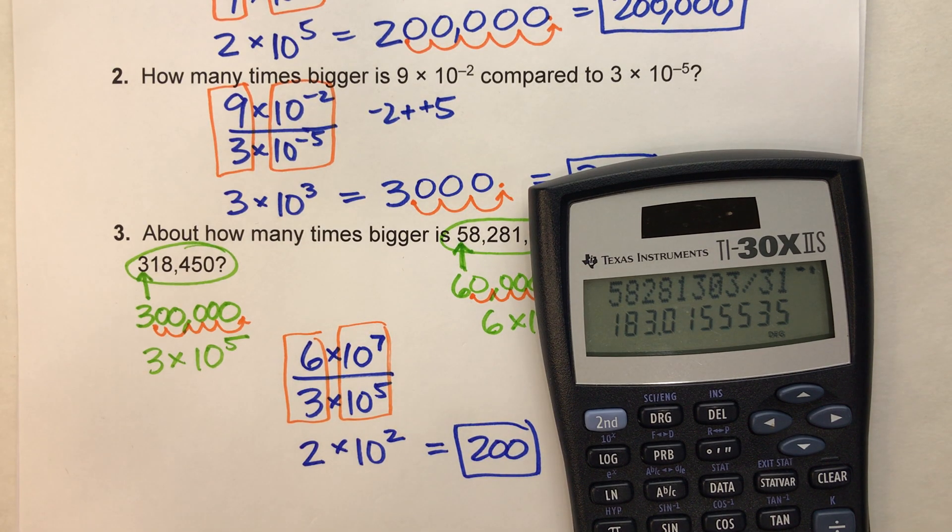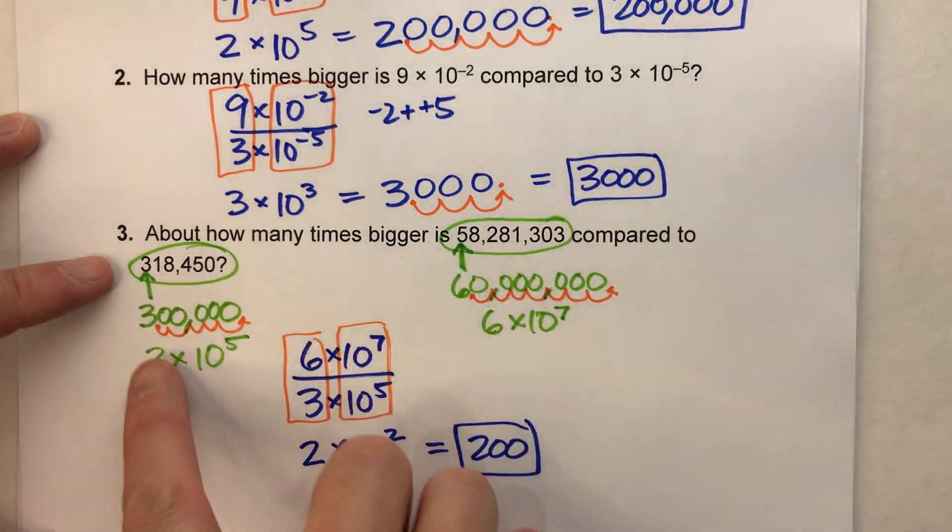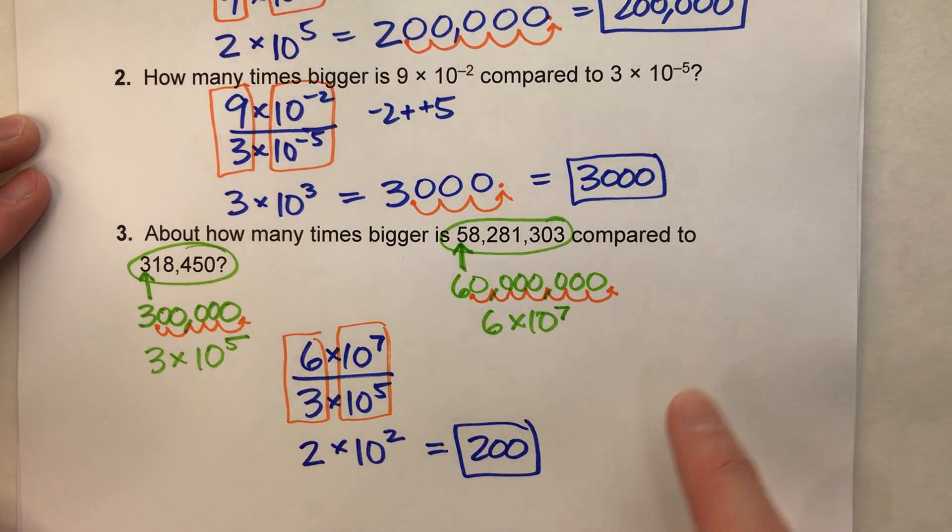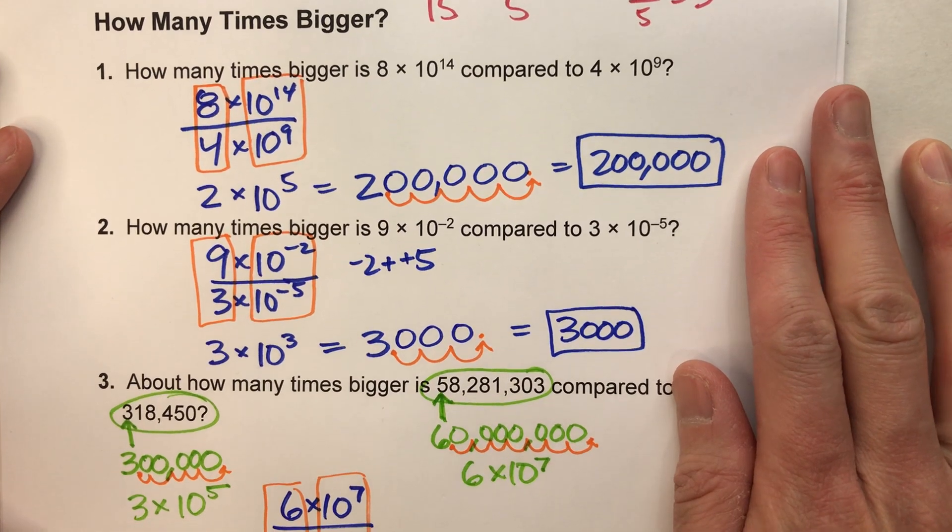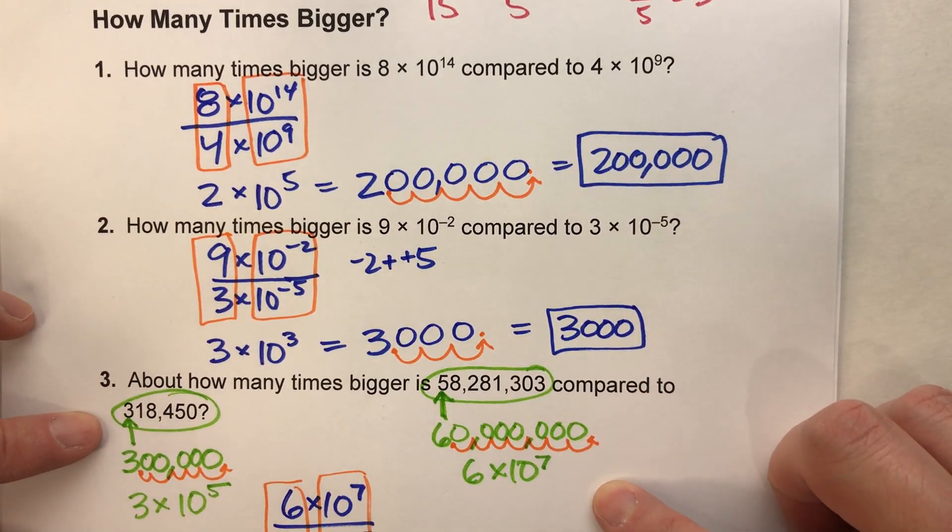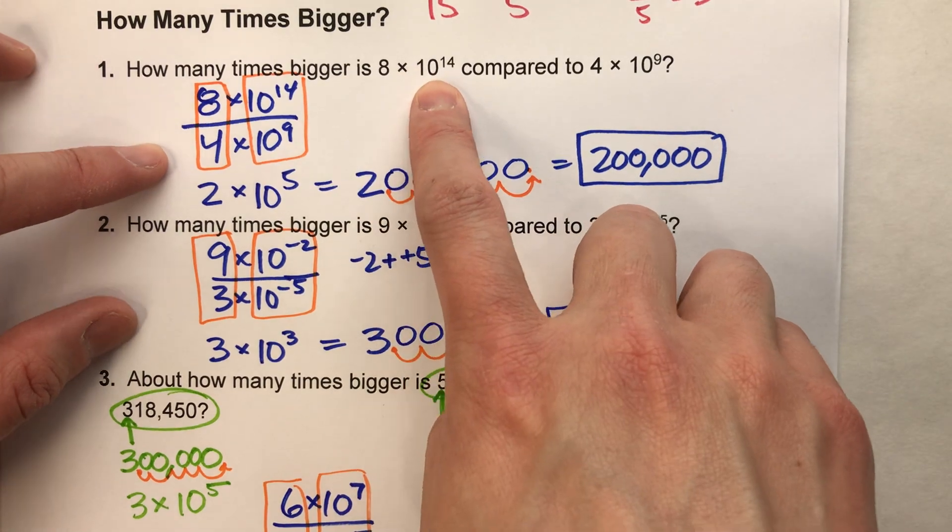So our approximation is pretty close. And we did all this without a calculator. So being able to approximate how many times bigger one number is than the other, not that hard when we use this technique of a single digit times the power of 10.